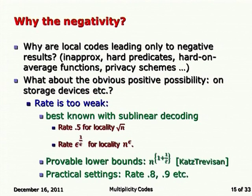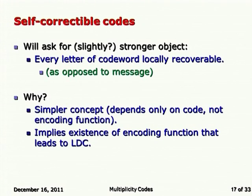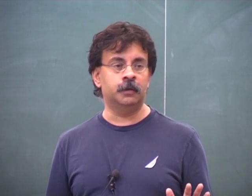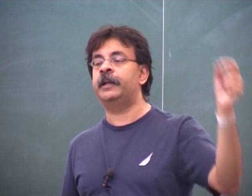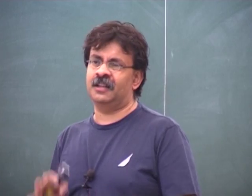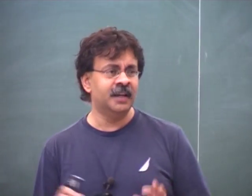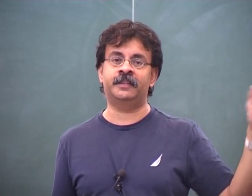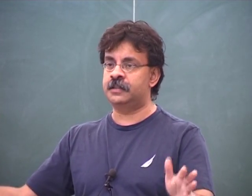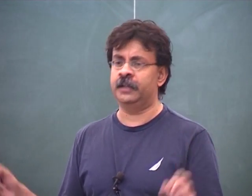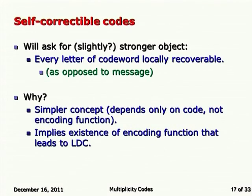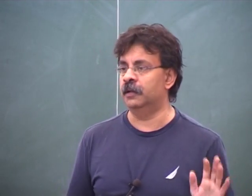The basic constructions are based on multivariate polynomials, also known as Reed-Muller codes. To describe them, pick a finite field F_q of size q, a number of variables m, and a degree parameter d. The message space corresponds to polynomials in m variables of degree at most d over F_q, and the encoding is the evaluation of the polynomial over the entire space F_q^m. Encoding is done in linear time and for linear codes this is simply matrix multiplication.